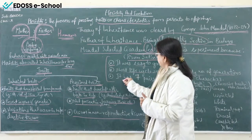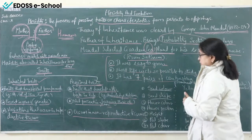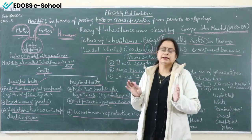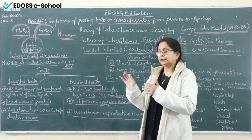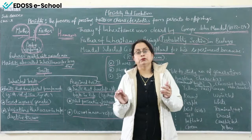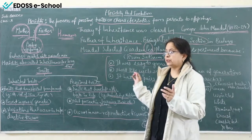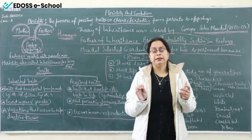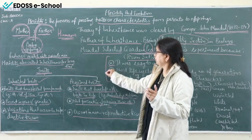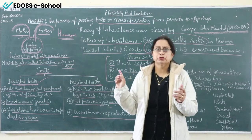The third reason is that the garden pea plant has seven pairs of contrasting characters — totally opposite characters. This was very helpful in studying hereditary characters. That is why Mendel chose the garden pea plant for his experiment. This is a very important question that has been asked in exams.